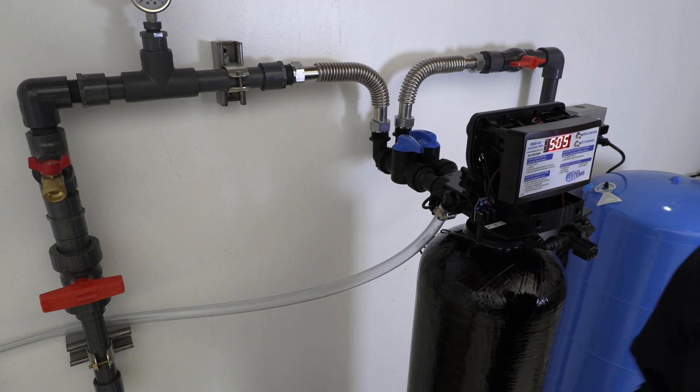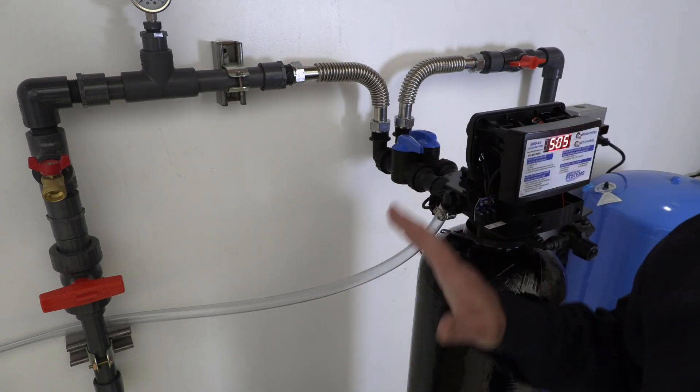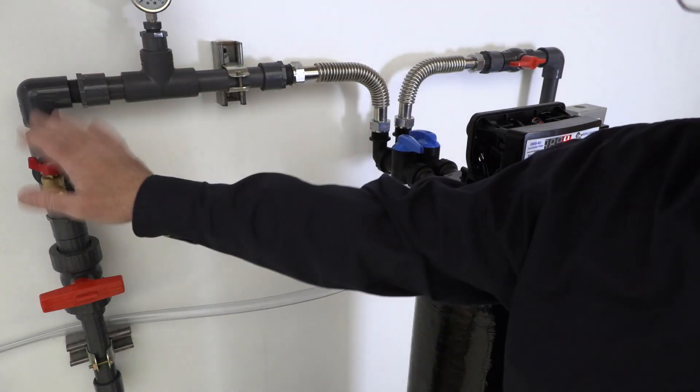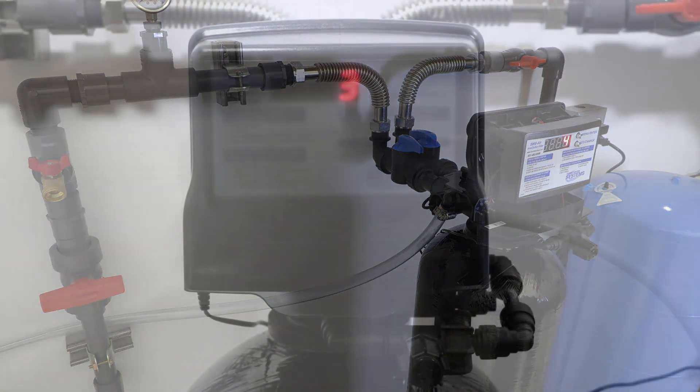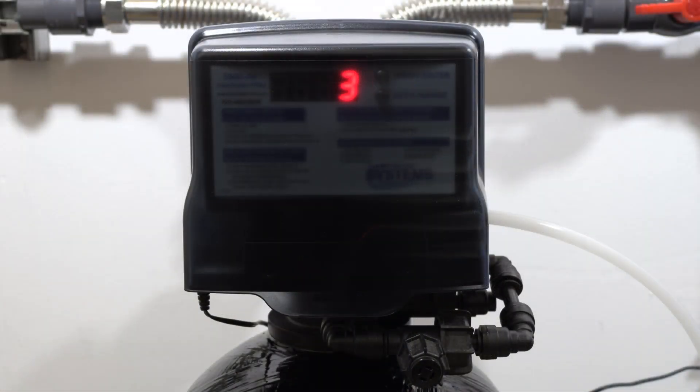Okay, so we've got our Pro Ox Air system all hooked up. Backwashes are all complete. The system is programmed, everything's ready to go. The last thing we want to do is install our nine-volt battery backup just in case we have a power failure.